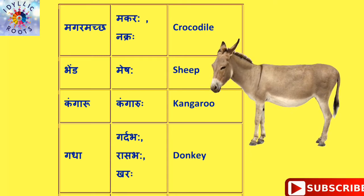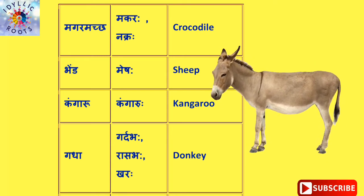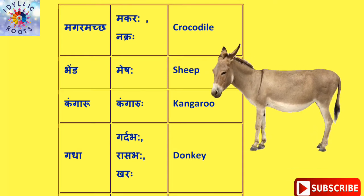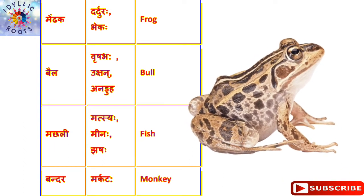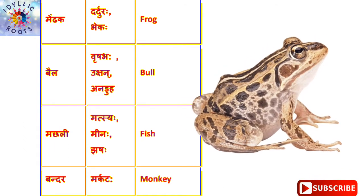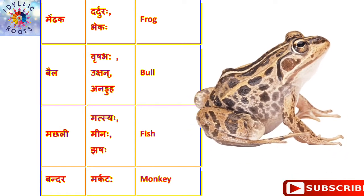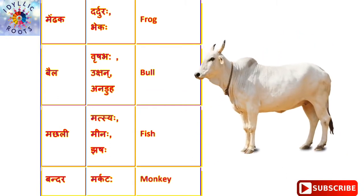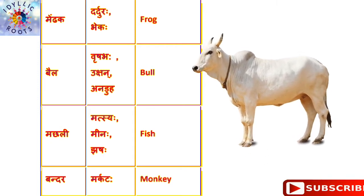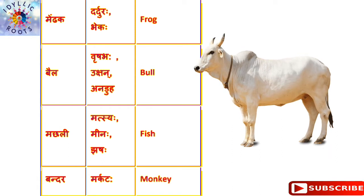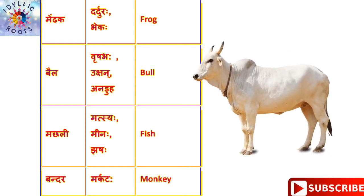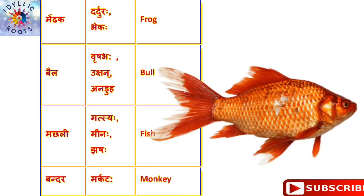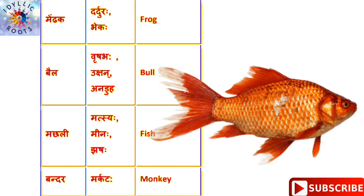गधा को English में कहते हैं Donkey और संस्कृत में कहते हैं खरः। मेंढक को English में कहते हैं Frog और संस्कृत में कहते हैं भेकः। बैल को English में कहते हैं Bull और संस्कृत में कहते हैं वृषभः।